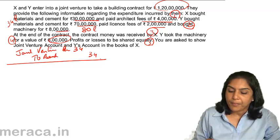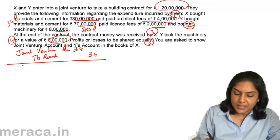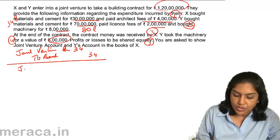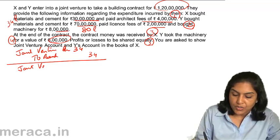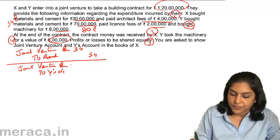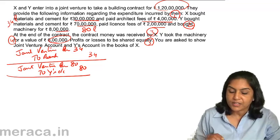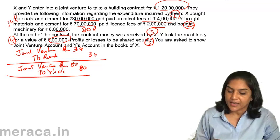Y spent 80 lakhs for the joint venture. So, Joint Venture Account is debited to Y's account, amount 80 lakhs — Y has spent 80 lakhs.